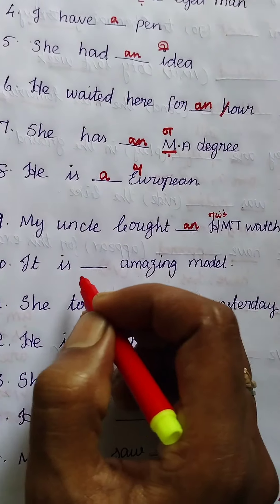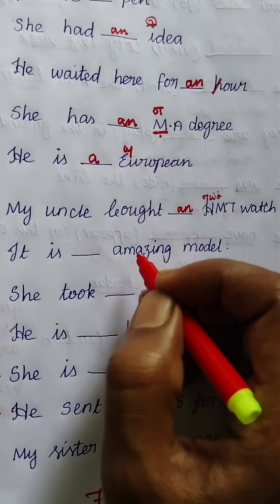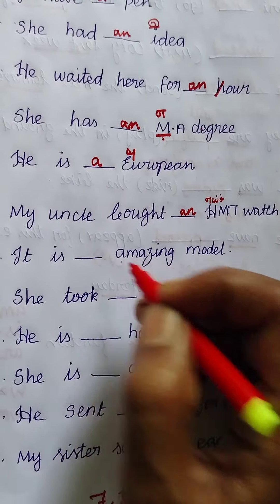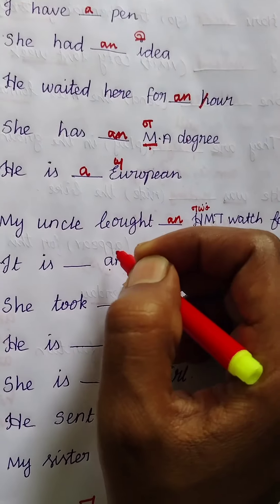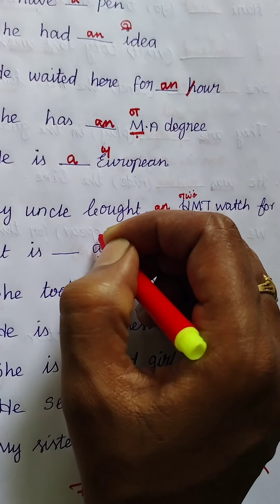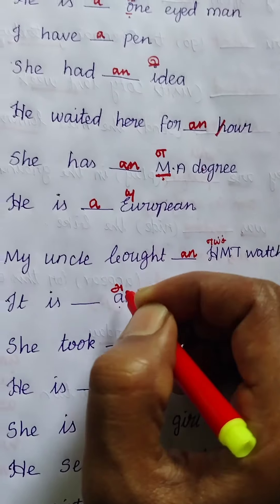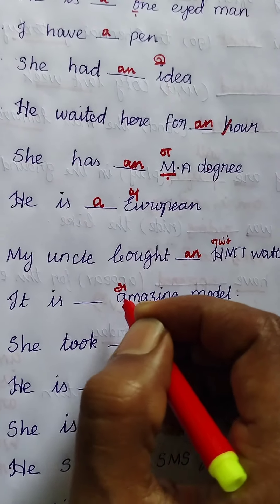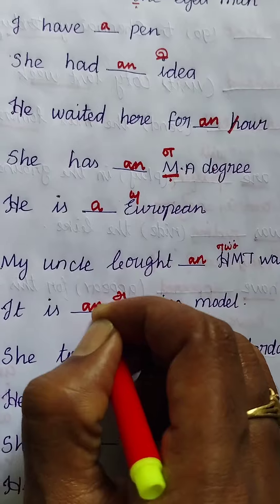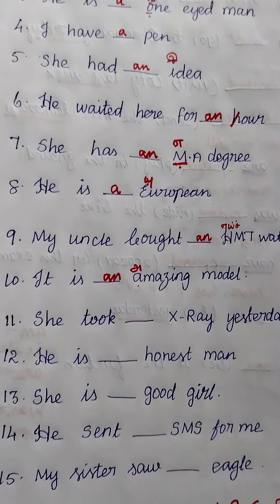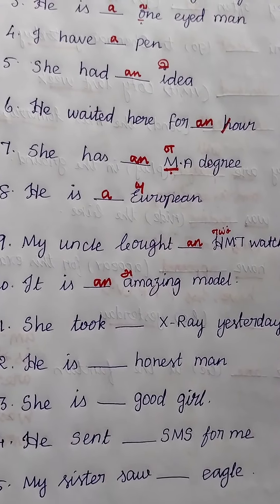Next: 'It is ___ amazing model.' The first letter is A. Vowel letter with vowel sound — the sound of 'amazing' starts with 'a', a vowel sound. So the answer is 'an'. It is an amazing model.